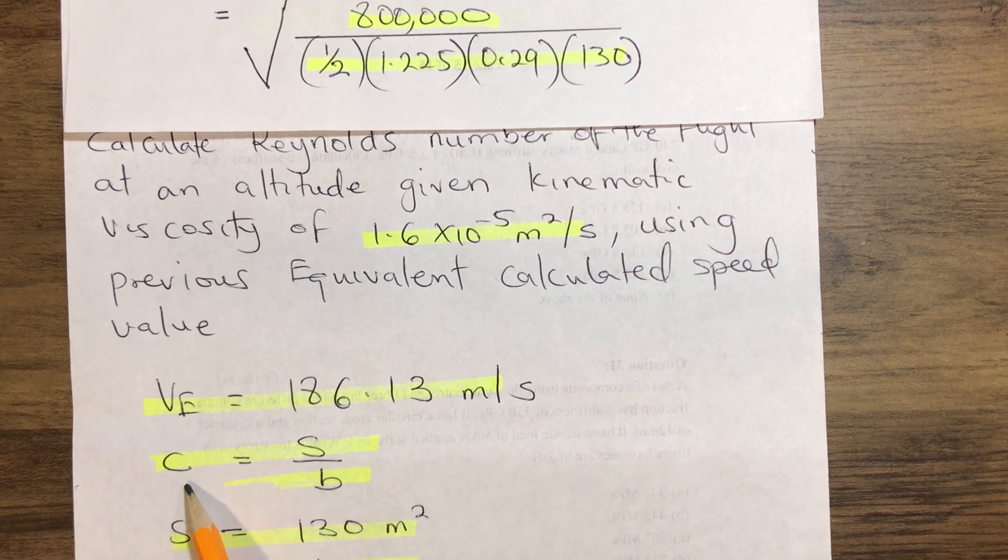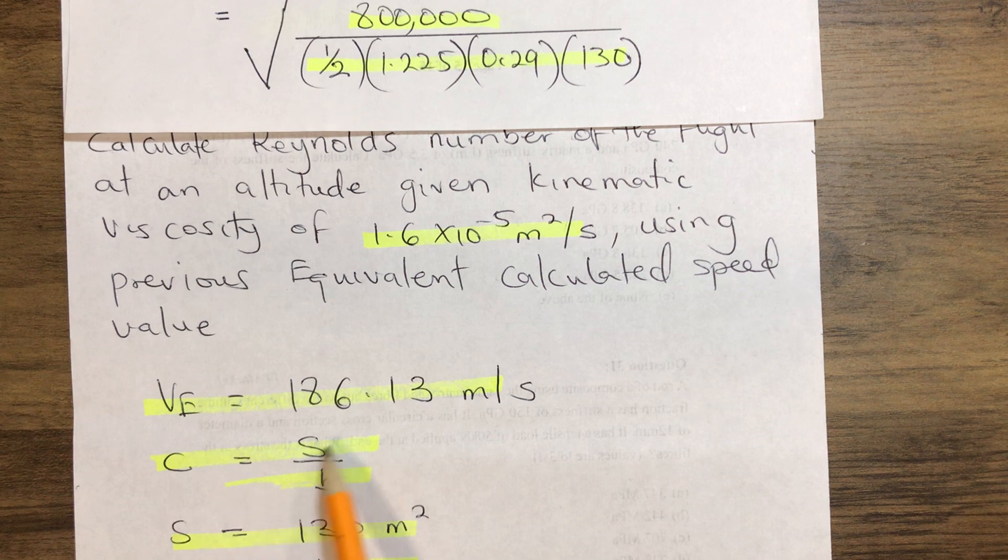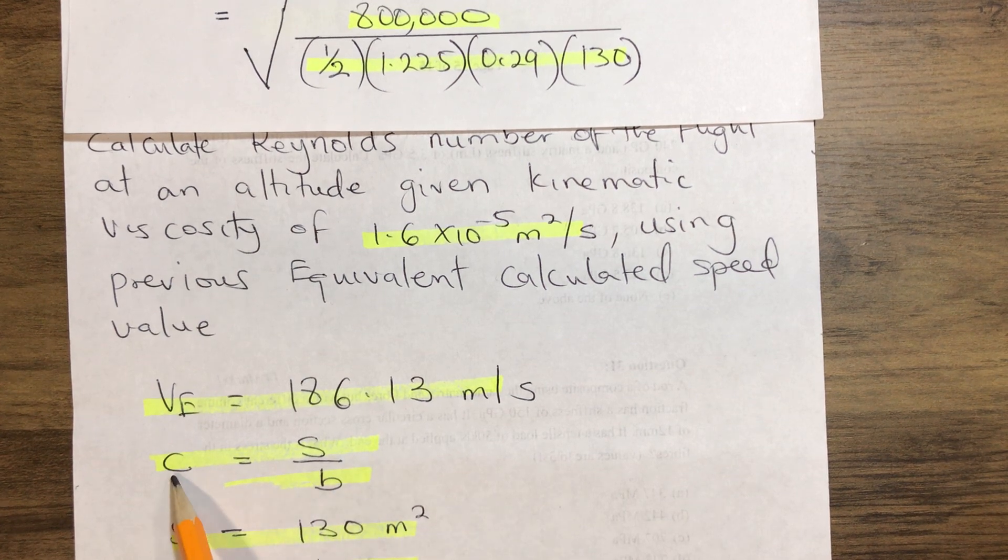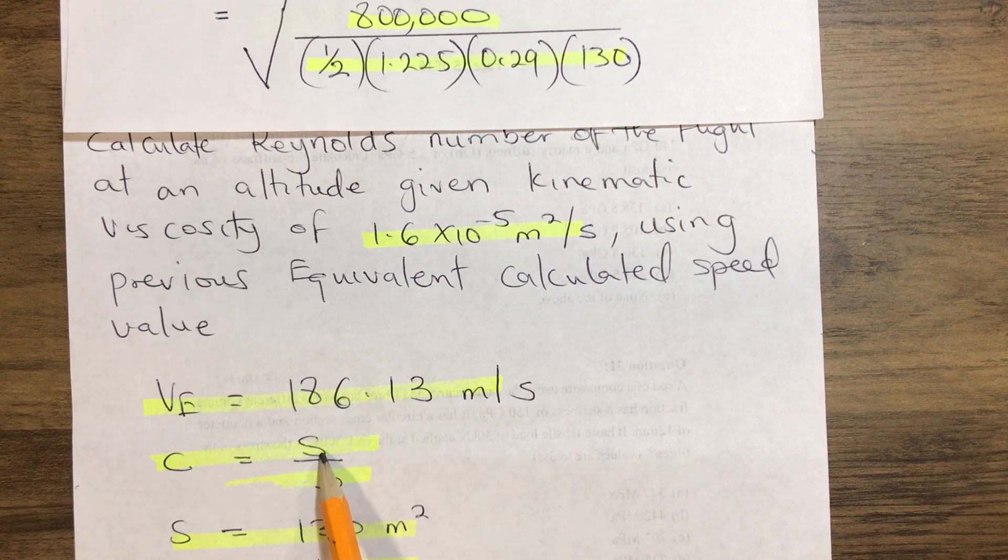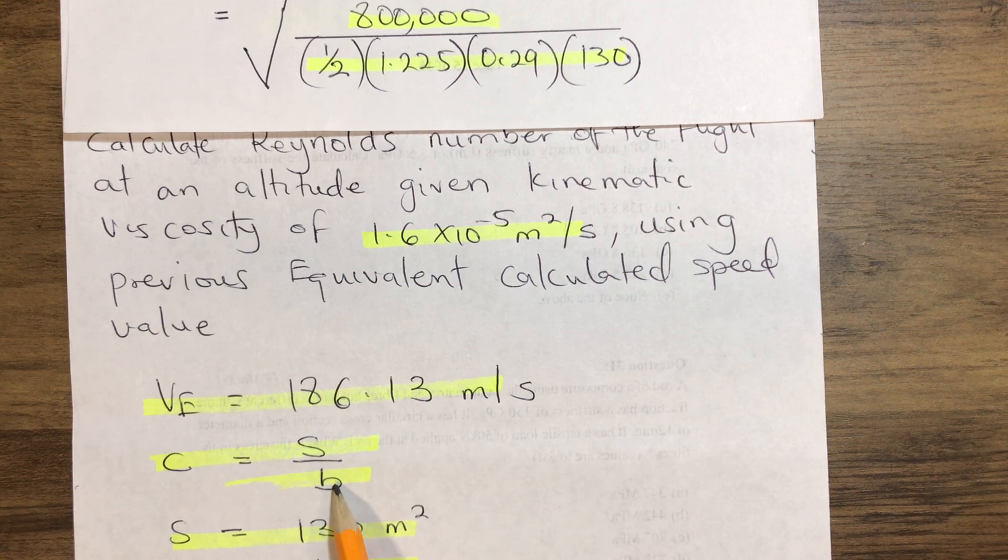And our chord, our aircraft wing chord equals S over B. Our C is chord, our S is the wing area, our B is equal to span.